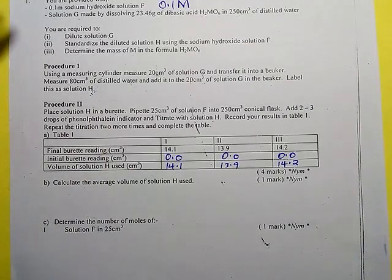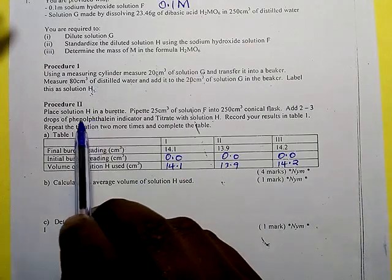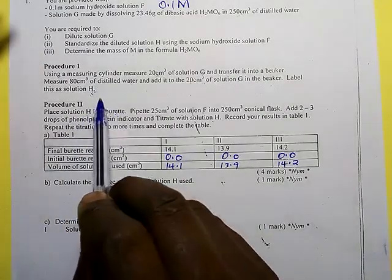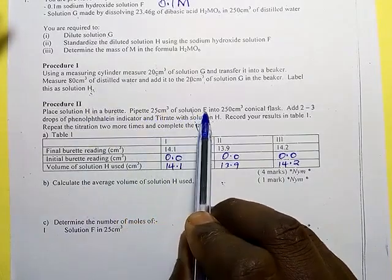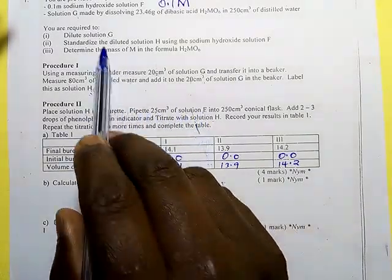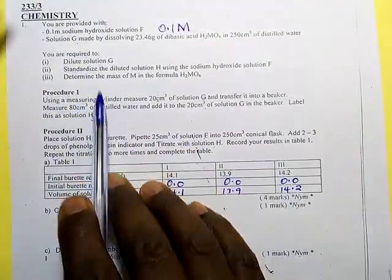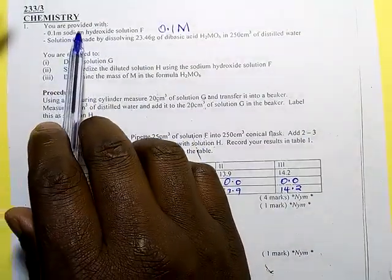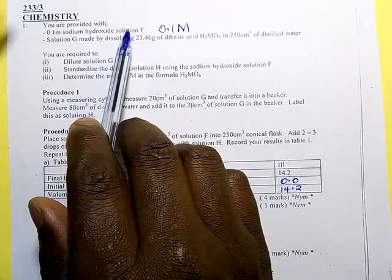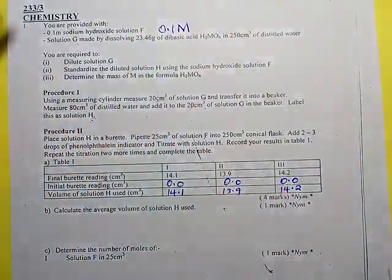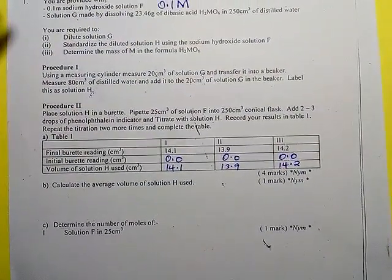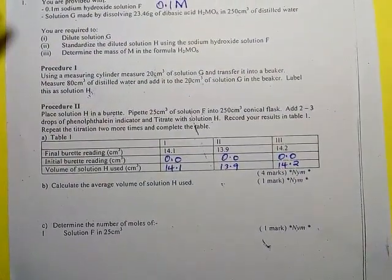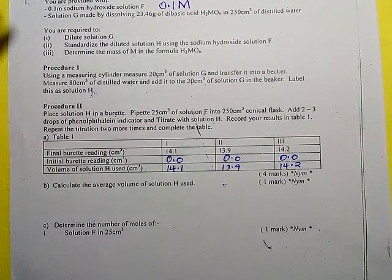Now, solution H is in the burette — it is an acid which is going to react with solution F, which is sodium hydroxide. An acid plus a base react together. These are the key pieces of information you must understand before you begin calculating.